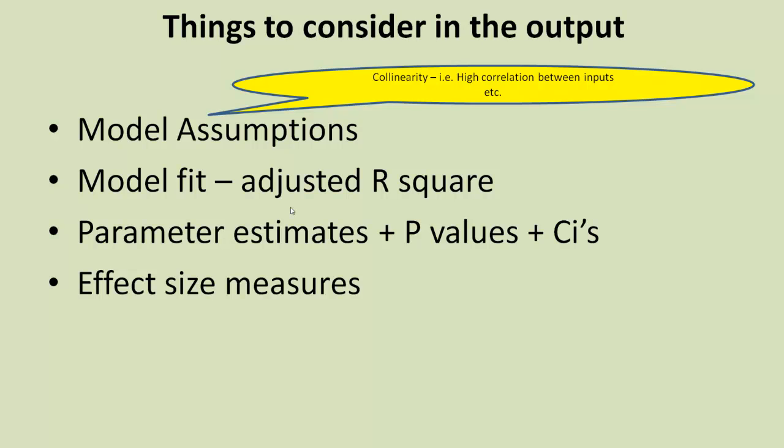One of the most important model assumptions with multiple regression is this thing called collinearity. That is where we have a situation with high correlation between the various input variables. If you've got high correlation between the input variables, it can cause problems with our output, and we'll be looking at that when we carry out the analysis.